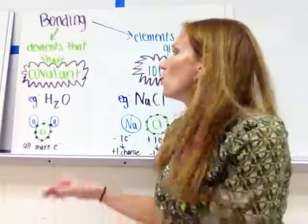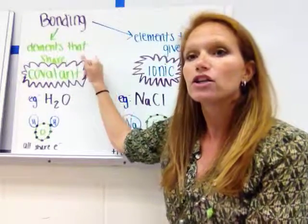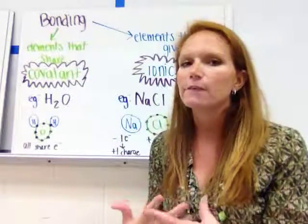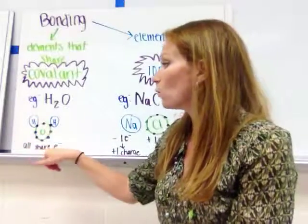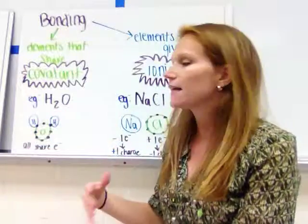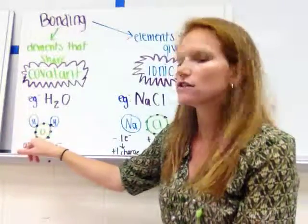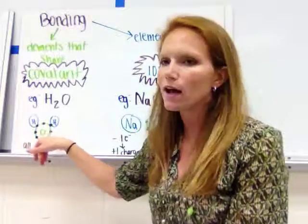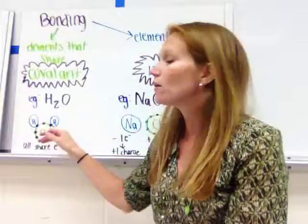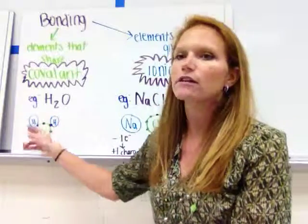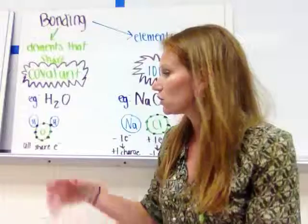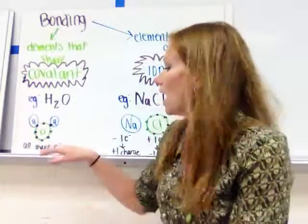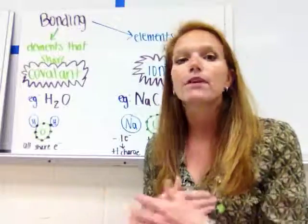Of these bonds there are two major types. The first is a covalent bond, where elements share electrons. One of the most famous covalent bonds is water, H₂O — two hydrogen atoms and an oxygen atom all sharing electrons. The electrons aren't just on one atom; they go around all of them, keeping them stuck together.